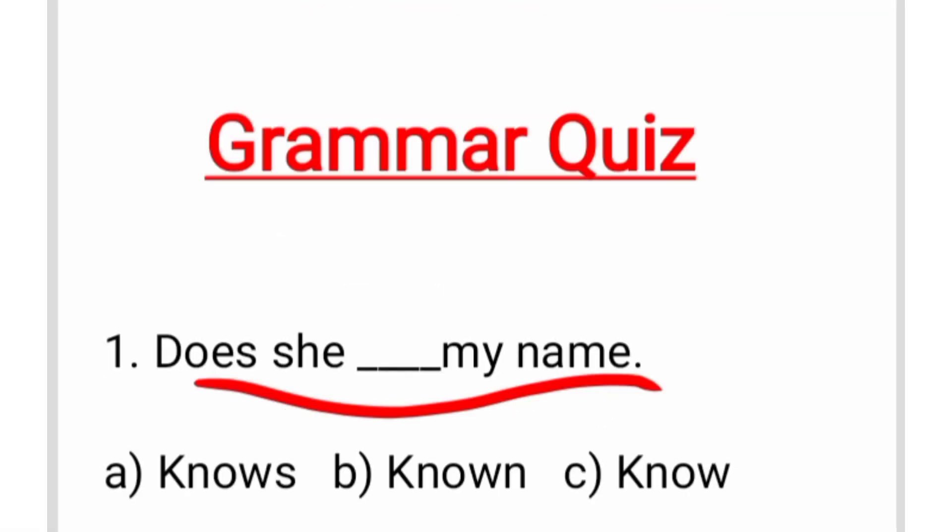The first question is: dash she dash my name. The three options are: 'knows', 'known', and 'know'. We don't use 'knows' because 'does' is already in the sentence, so we don't add another -s. 'Known' is the past participle form and doesn't suit the tense. The sentence is present tense and already has 'does', so we use the verb's first form: 'Does she know my name?'